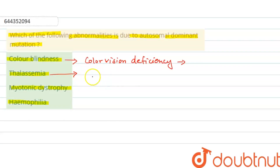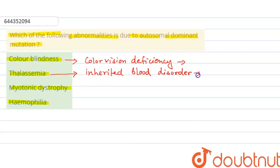The second option is thalassemia, which is an inherited blood disorder that can cause the body to have less hemoglobin than normal. It can also cause anemia, leaving you fatigued.